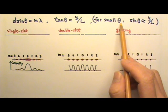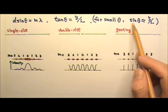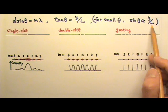If it's a small angle, let's say 10 degrees or less, then we can say sine theta is about the same as y over L.